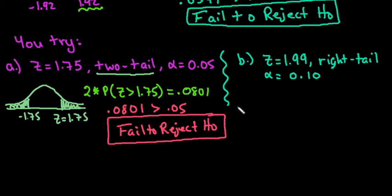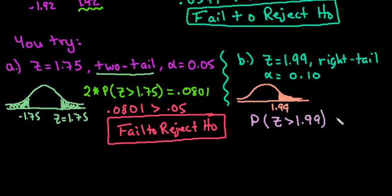For the last one, we're going to go ahead and draw out our model. The z this time, because it's a right tail test, would be in the right tail. And we would say that it starts at 1.99. So because this is only one tail, we're going to be looking for the probability that z is greater than 1.99. So we do not multiply it by 2 in this case.